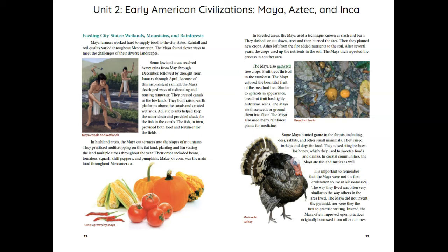The Maya also gathered tree crops. Fruit trees thrived in the rainforest, and the Maya enjoyed the bountiful fruit of the breadnut tree. Similar to apricots in appearance, breadnut fruit has highly nutritious seeds. The Maya ate these seeds or ground them into flour. They also used many rainforest plants for medicine. Some Maya hunted deer, rabbits, and other small mammals in the forests. They raised turkeys and dogs for food, and raised stingless bees for honey, which they used to sweeten foods and drinks. In coastal communities, the Maya ate fish and turtles as well.